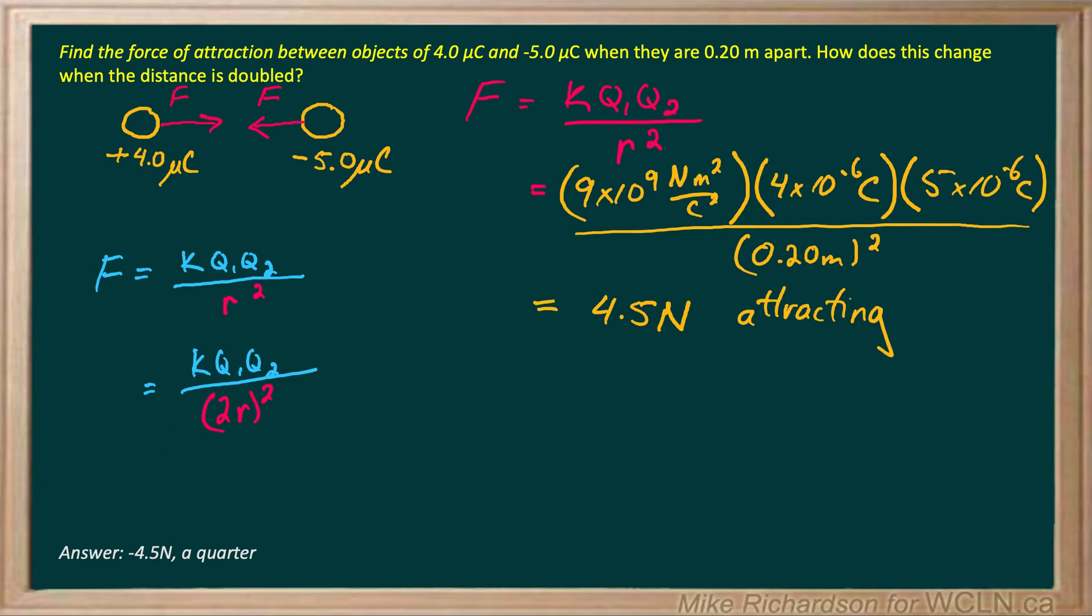Now when I simplify this, I get K, Q1, Q2. And when I square anything in parentheses, everything inside gets squared. So that becomes 4R squared.